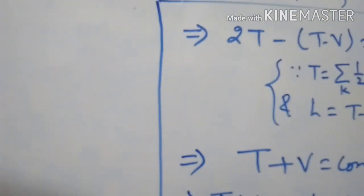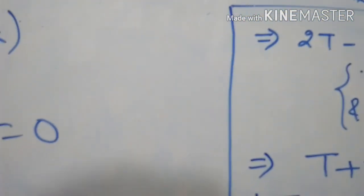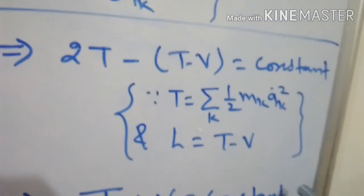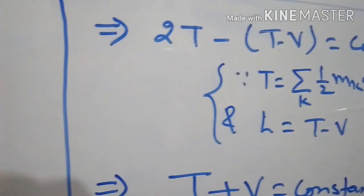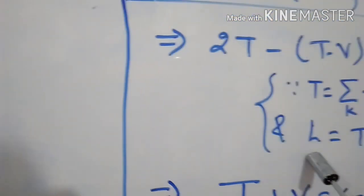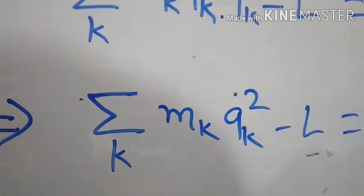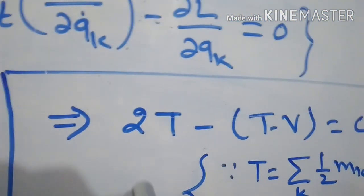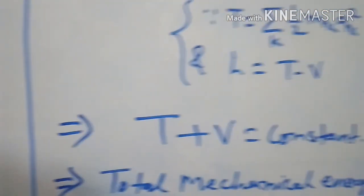We know that summation K Mk QK dot squared equals 2T, because T equals summation K half Mk QK dot squared. Also, L equals T minus V. So we write 2T minus (T minus V) equals constant, which gives T plus V equals constant.